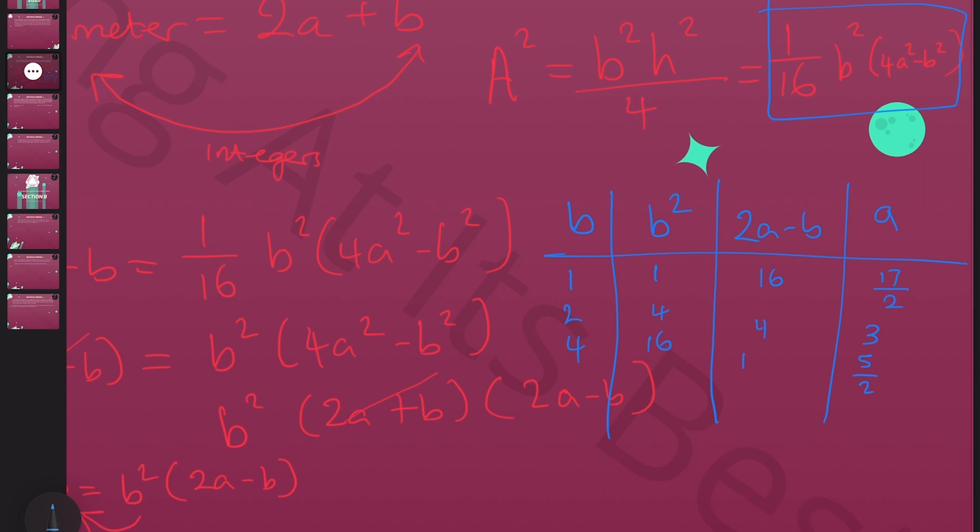We've created a table to find the values of A. B² follows automatically. Looking at the equation above, we can work out what 2A minus B would be. Looking at B and 2A minus B, we can work out what we have for A. This gives us three pairs: 17 over 2 comma 1; 3 comma 2; and 5 over 2 comma 4. These are the three possible pairs of A and B.